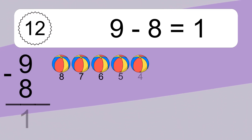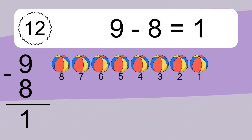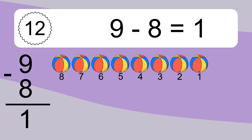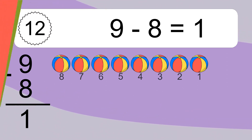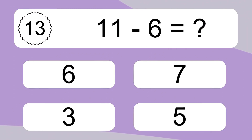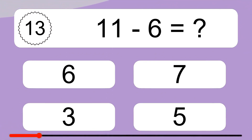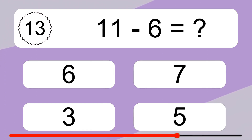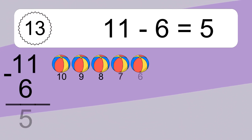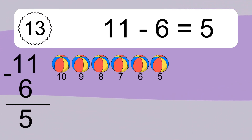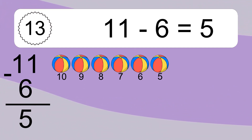9 minus 8 equals what? 9 minus 8 equals 1. Let's count it: 8, 7, 6, 5, 4, 3, 2, 1. 11 minus 6 equals what? 11 minus 6 equals 5. Let's count it: 10, 9, 8, 7, 6, 5.